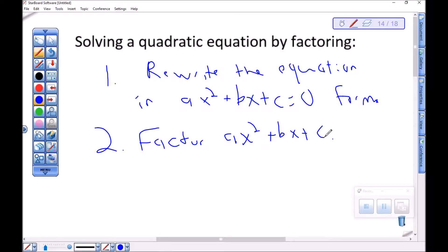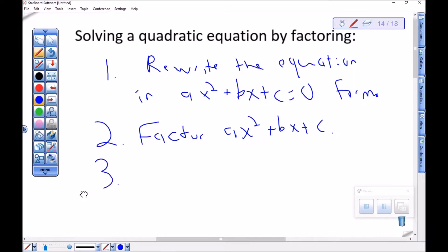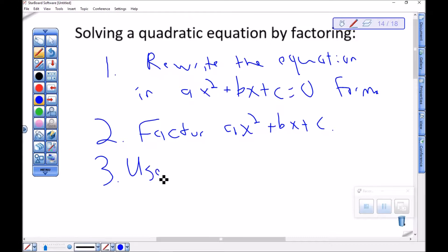Once we have it factored, then we can use the zero product principle to set each factor equal to 0.